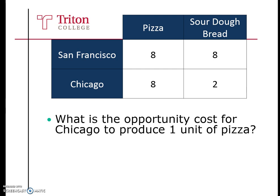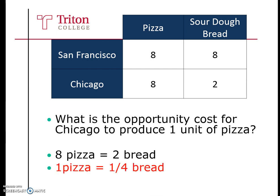What is the opportunity cost for Chicago to produce one unit of pizza? Chicago in one day can produce eight units of pizza or two units of bread. One pizza would equal a quarter unit of bread. So the opportunity cost for Chicago for one unit of pizza is a quarter loaf of bread.